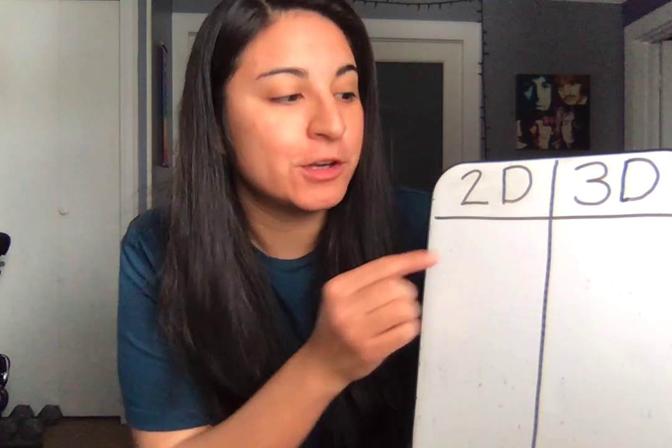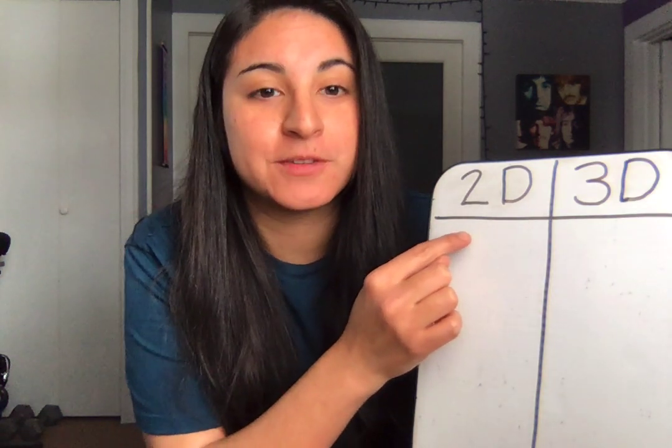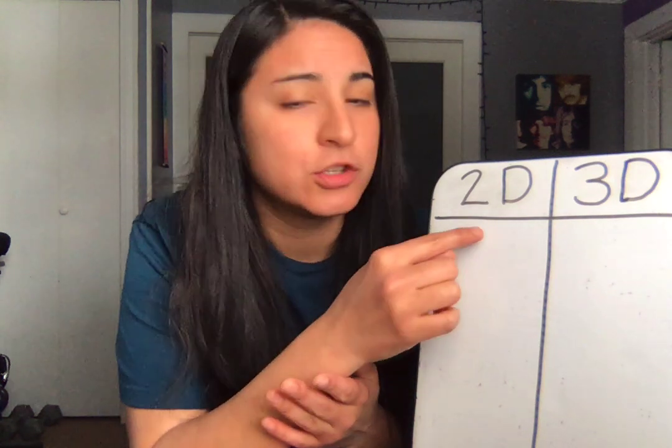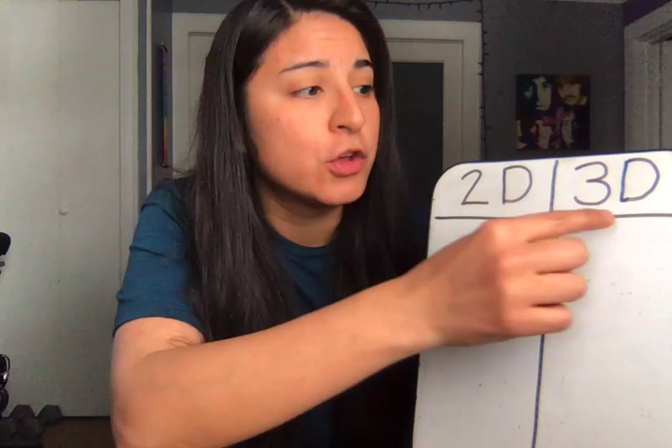We've already learned about 2D shapes. 2D shapes are flat. Say it with me: 2D shapes are flat. 3D shapes are solid. Say it with me: 3D shapes are solid.